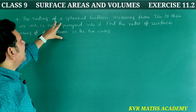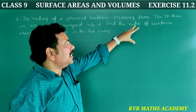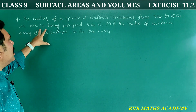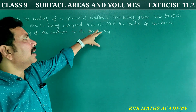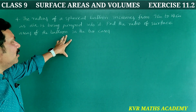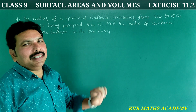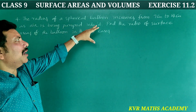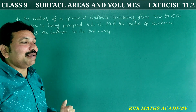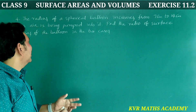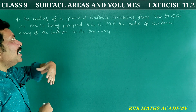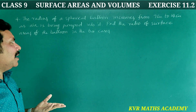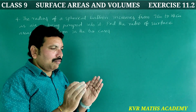4th question: The radius of a spherical balloon increases from 7 cm to 14 cm as air is being pumped into it. Find the ratio of surface areas of the balloon in the two cases.